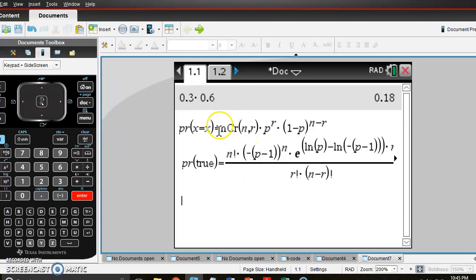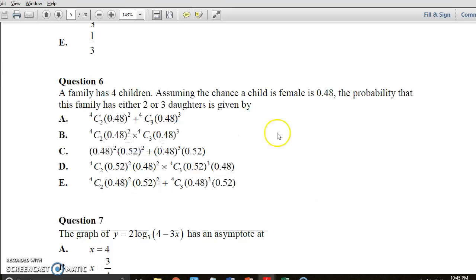In this case we've got 4, so we'll say 4C2. We'll say 0.48 to the power of 2, 0.52 to the power of 2. So 0.48 to the power of 2, 0.52 to the power of 2. So that's what we've got happening there. So it's going to be this one here. And then we've got 4C3, so this is where we have three girls out of four and that's what we end up having here. Okay, so that one's B.